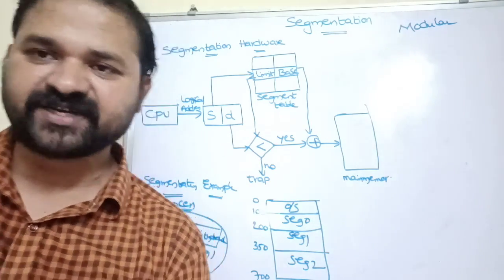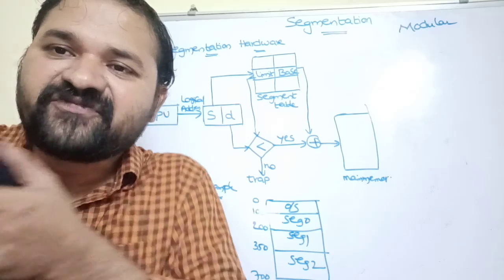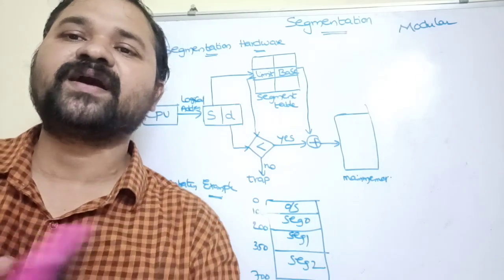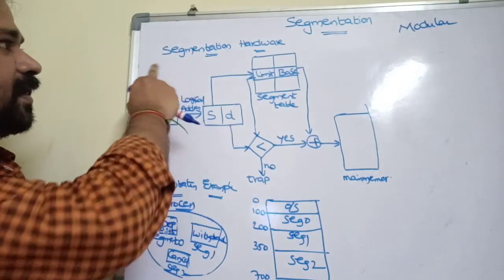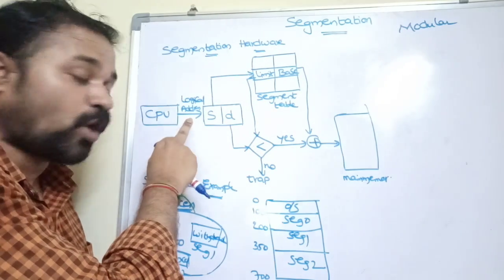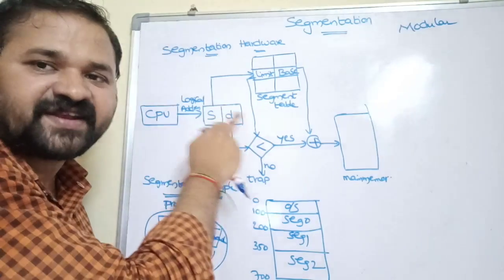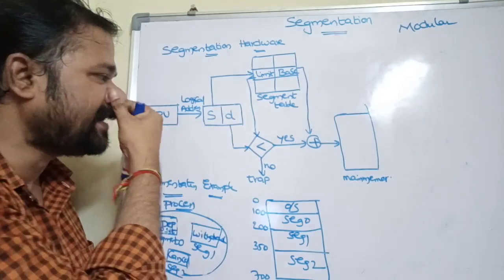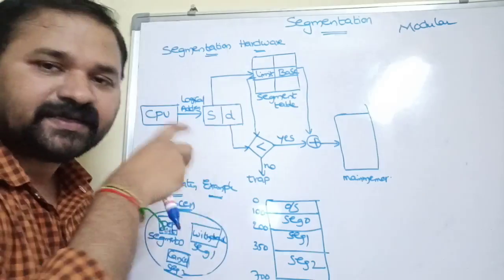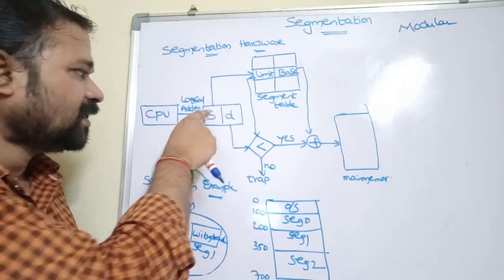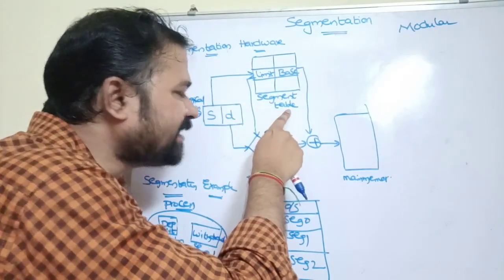Similarly, the main memory is also divided into a number of partitions depending on the size of the segment, and the operating system allocates a free frame for the corresponding segment. The CPU generates a logical address in order to execute an instruction. This logical address is divided into two parts: the first part specifies the segment number, and the second part specifies the offset — meaning a location inside the segment.